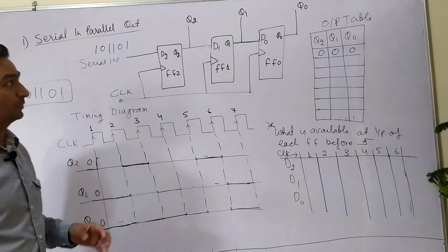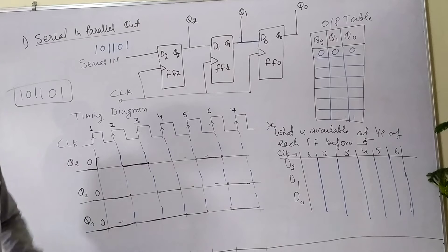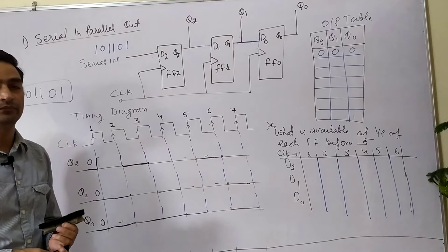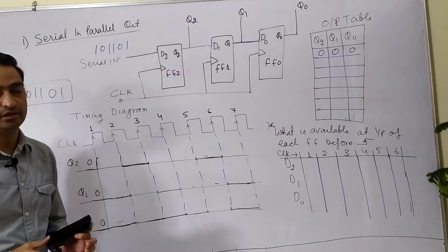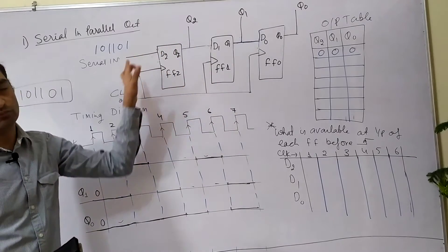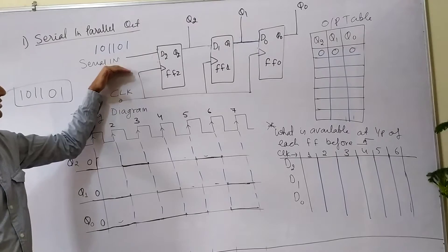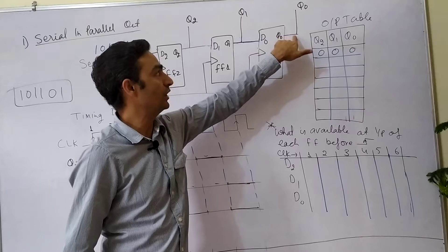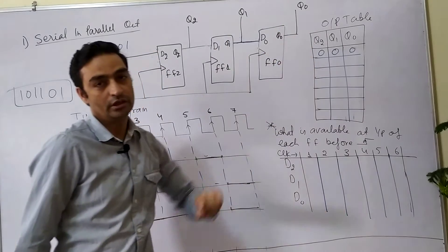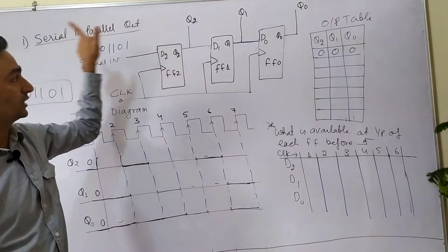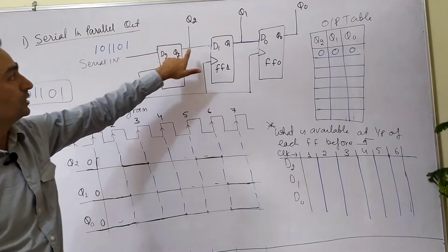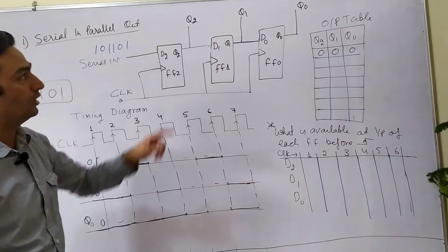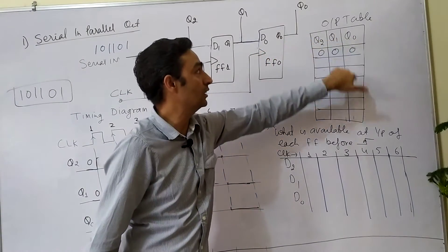Hello friends. The next topic of discussion is Serial In Parallel Out Shift Register. In the last class we had an introduction of Serial In Serial Out Shift Register, wherein the input was Serial In and output was taken from the LSB flip-flop. Now in this case of Serial In Parallel Out, each flip-flop is contributing to the output, so the output is in parallel fashion rather than serial.